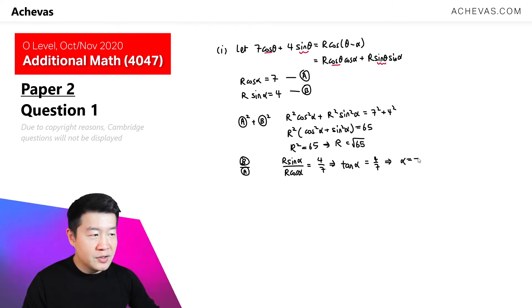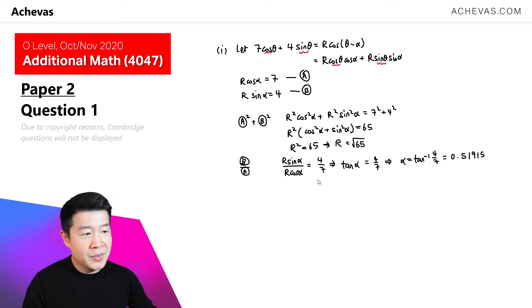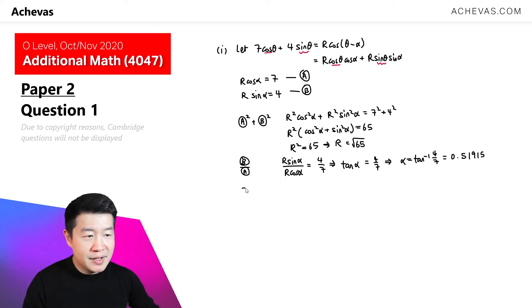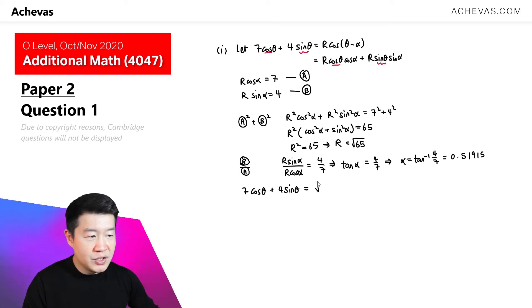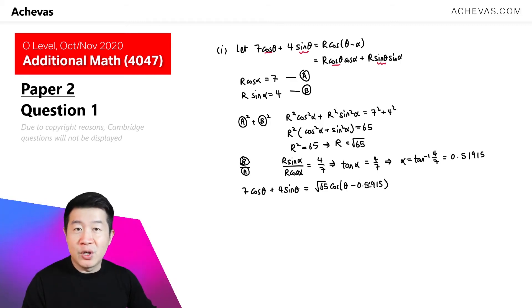Since α is in the first quadrant, α = tan⁻¹(4/7). Computing this on a calculator gives 0.51915 radians. Now that we have solved for both R and α, we can re-express 7cosθ + 4sinθ as √65 · cos(θ − 0.51915).